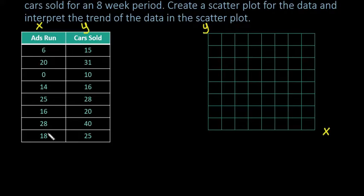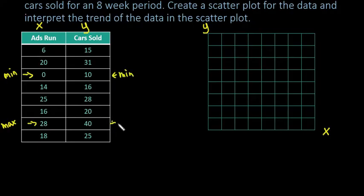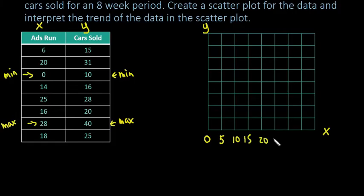Once you've decided which is your explanatory and which is your response, look for the minimum and maximum in each. The minimum for ads run is 0 and the max is 28. For cars sold, the minimum is 10 and the max is 40. For X, I want the scale to go from 0 to 28, so I'll start at 0 and count by 5s. I only needed to go up to 30 since 28 falls below that.